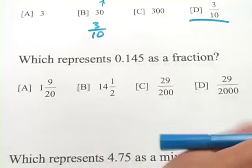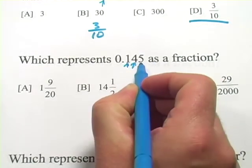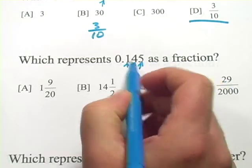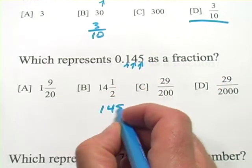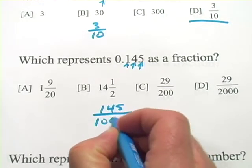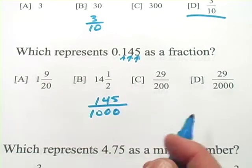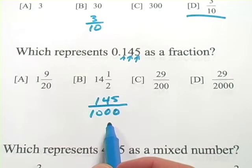This next one's a little bit harder, but we can do this. This is the tenths place, this is the hundredths place, and this is the thousandths place. So we're going to use that last place, and we'll put all of those numbers, 145 over 1,000. And you might think that's your answer, but then when you look at the answer choices, you'll see it's not up there. So we have to do a little bit of reducing on this.